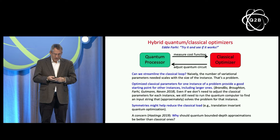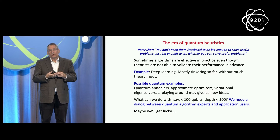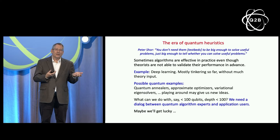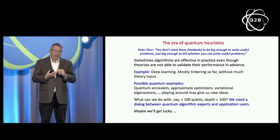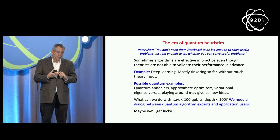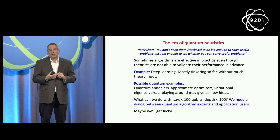This needn't discourage us too much. We're accustomed in classical computing to having algorithms which are effective in practice where theorists were not able to validate performance in advance. A very relevant current example is deep learning, which is having a big practical impact even though theorists still lack an understanding of why deep learning networks can be efficiently trained for many applications. So we'll be in an era of quantum heuristics — approximate optimizers, quantum annealers, and so on — where we don't have good theoretical arguments about performance, but we'll try them. Still, finding real applications with the relatively small quantum circuits available in the next few years will be quite challenging.